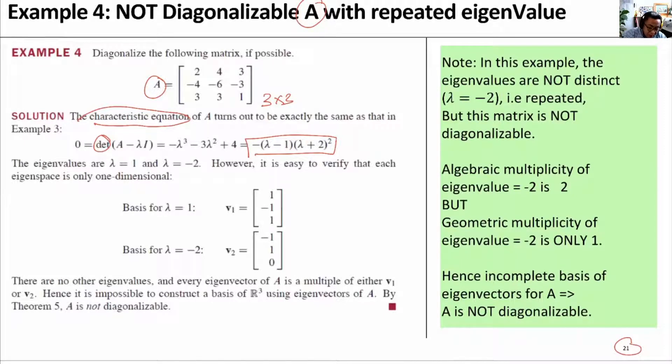Now, we then go on and find the eigenvectors for lambda equals 1. We can find the basis of it. The eigenspace for lambda equals 1 is this. For lambda equals minus 2, interestingly...